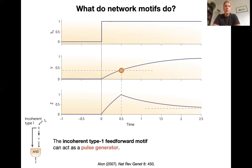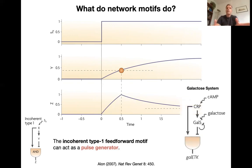This has two effects. The main effect is that the incoherent type 1 feedforward motive can act as a pulse generator. So you end up with a pulse of Z. And interestingly also the response that it shows here in the beginning is faster than if you just had a normal single basic transcriptional activation. So this is an interesting type of behavior. And again, you can find it in the galactose processing system of E. coli, which implements such an incoherent feedback motive.